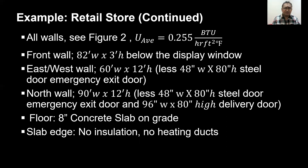We have already solved this in the previous video tutorial. The front wall is 82 feet wide by 3 feet high below the display window. The east as well as the west wall is 60 feet wide by 12 feet high, less the 48 inch wide by 80 inch high steel door for the emergency exit on each side. The north wall will be 90 feet wide by 12 feet high, deducting the emergency exit door and the 96 inch wide by 80 inch high delivery door. The floor is made of 8 inch concrete slab on grade, and the slab edge has no insulation and no heating duct.